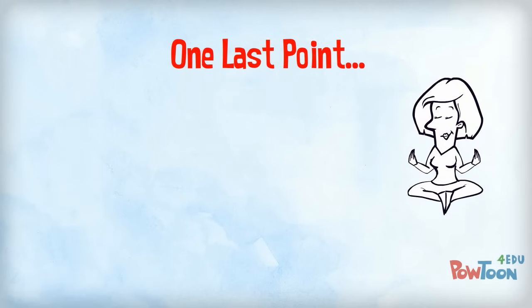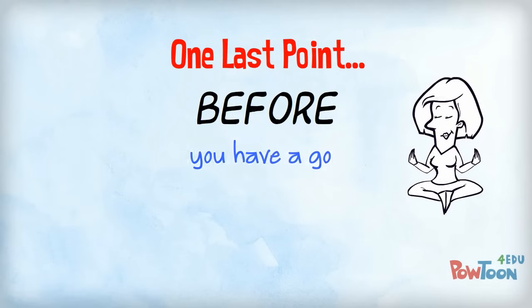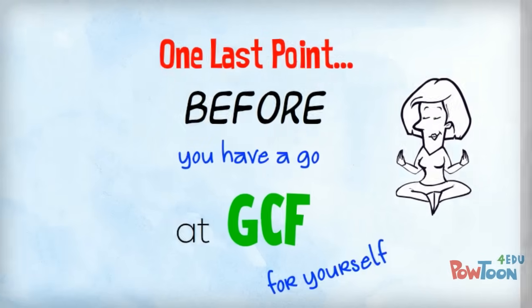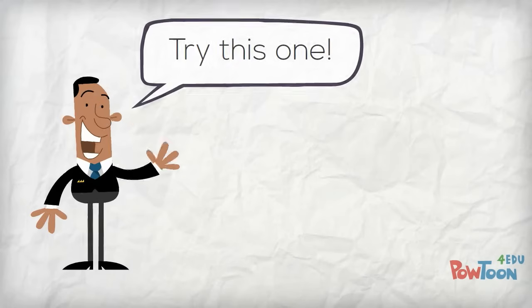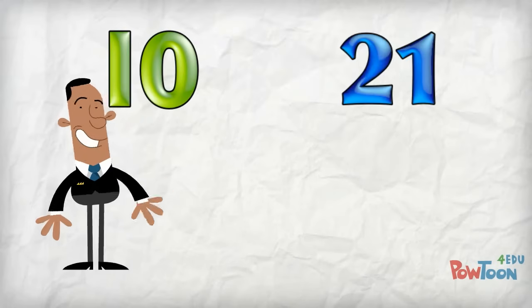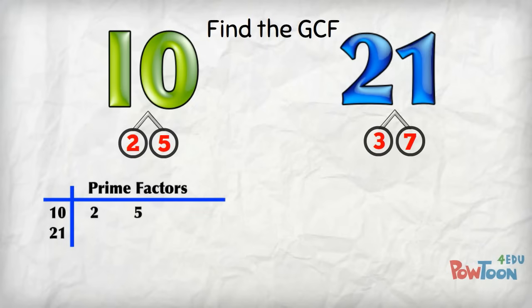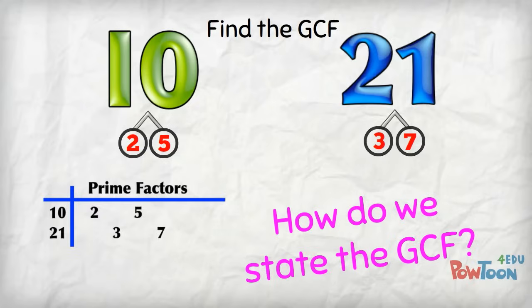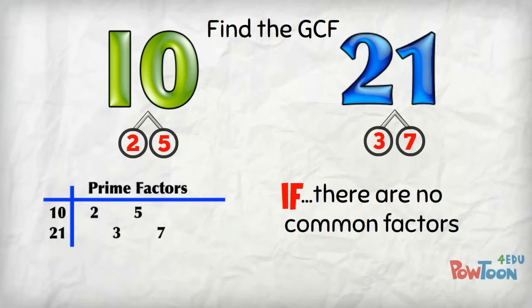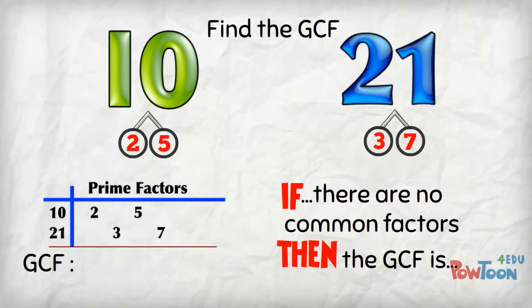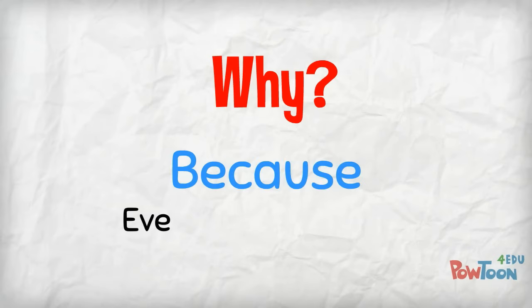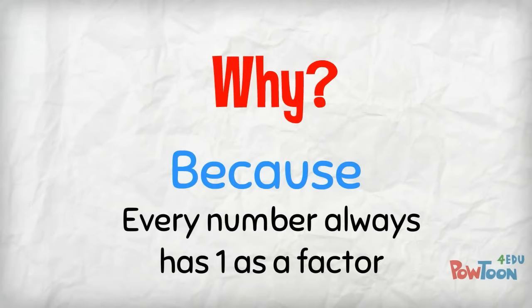There's one last point you need to be aware of before you have a go at GCF for yourself. At some point, your teacher is going to give you a pair of numbers where, when you do the prime factorisation, you find that there are no prime factors common to the two numbers. So how do we list the GCF? If there are no factors common to the two numbers, then the GCF is 1. Why? Because every number always has 1 as a factor.